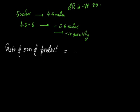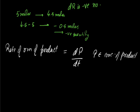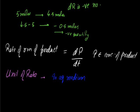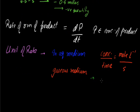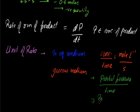The rate of reaction of a product will be dP by dt, where P represents the concentration of product at any time t. We know that the product concentration will be increasing, so the dP term will be positive — hence no need for a negative sign. Now for units of rate: in aqueous medium (where reactants are soluble in water), the unit of rate is concentration per unit time, which is moles per liter per second. If the reactants and products are gases, then the unit of rate is expressed as partial pressure per time, which is pascals per second.